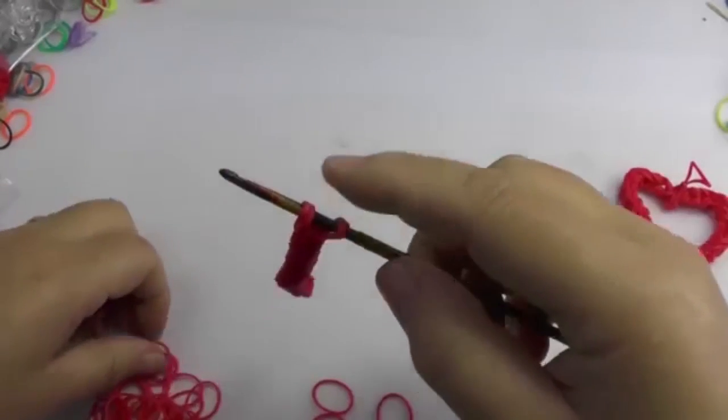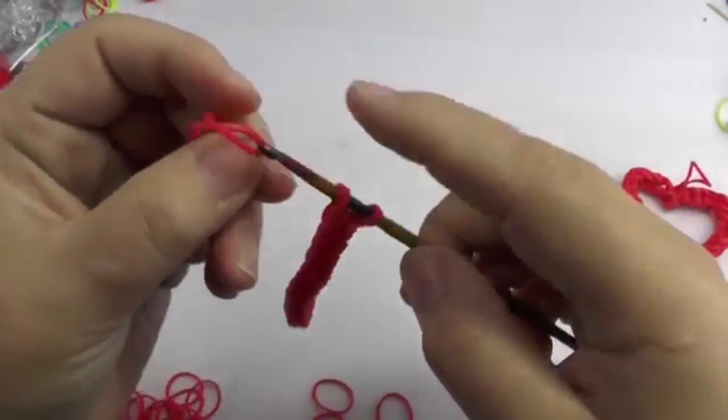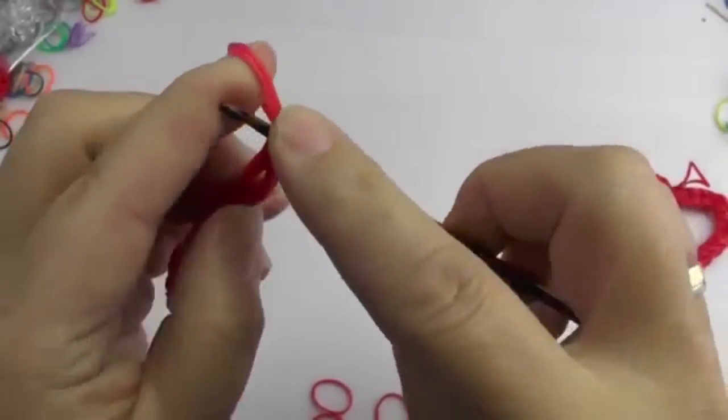Here is our heart point, so now we finish the one half. So let's do the pointy part. Take two bands again and do the same as before, so another one.